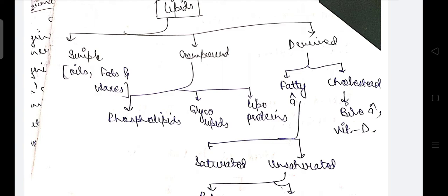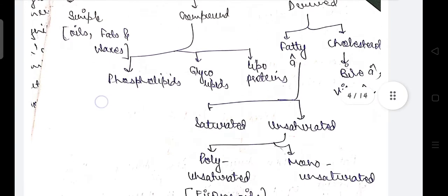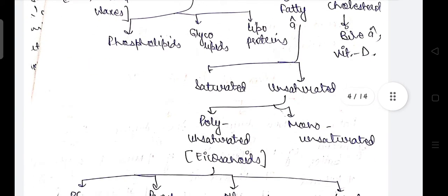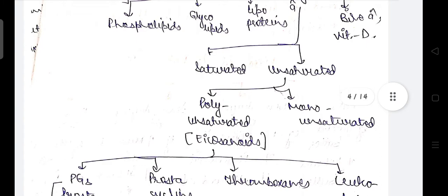In simple lipids there are oils, fats, and waxes. In compound lipids there are phospholipids, glycolipids, and lipoproteins. In derived lipids there are fatty acids and cholesterol. Fatty acids are further divided into two categories: saturated and unsaturated. Cholesterol examples include bile acid and vitamin D.